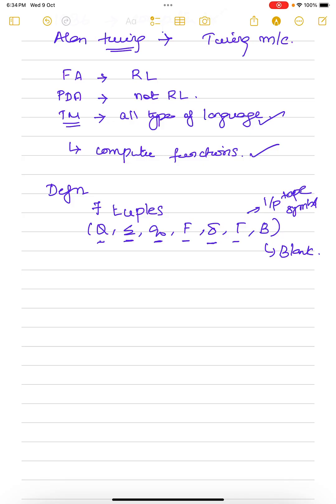Now, delta for Turing machine is defined as Q cross input tape symbol tending to some other state cross change in tape symbol with either a left, right or halt operation. With a left, right or halt operation.